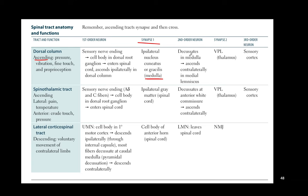The second-order neuron decussates at the medulla and ascends contralaterally, synapsing in the VPL of the thalamus. All sensory information synapses in the VPL, and the third-order neuron terminates at the sensory cortex.